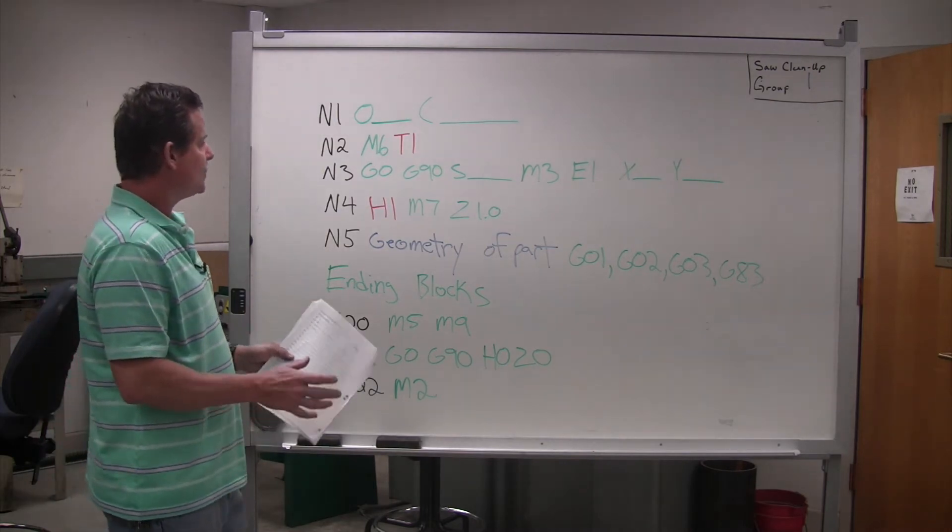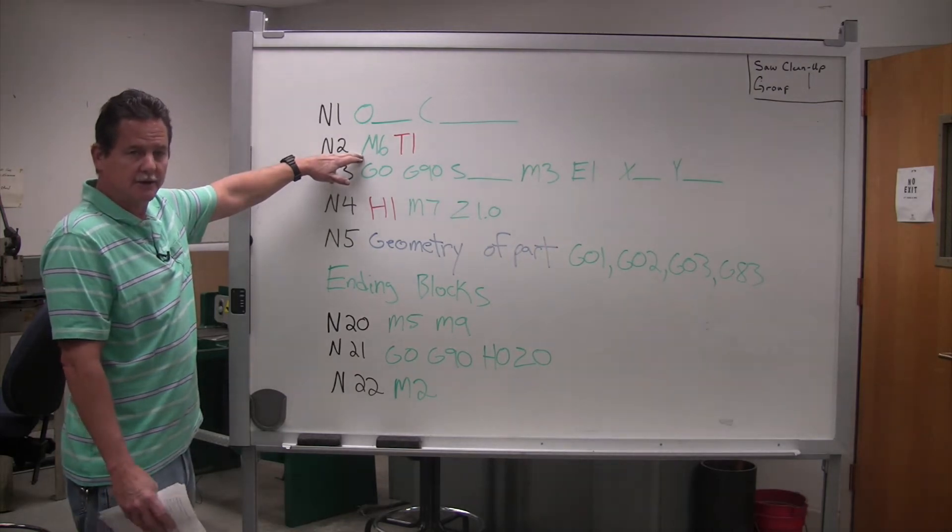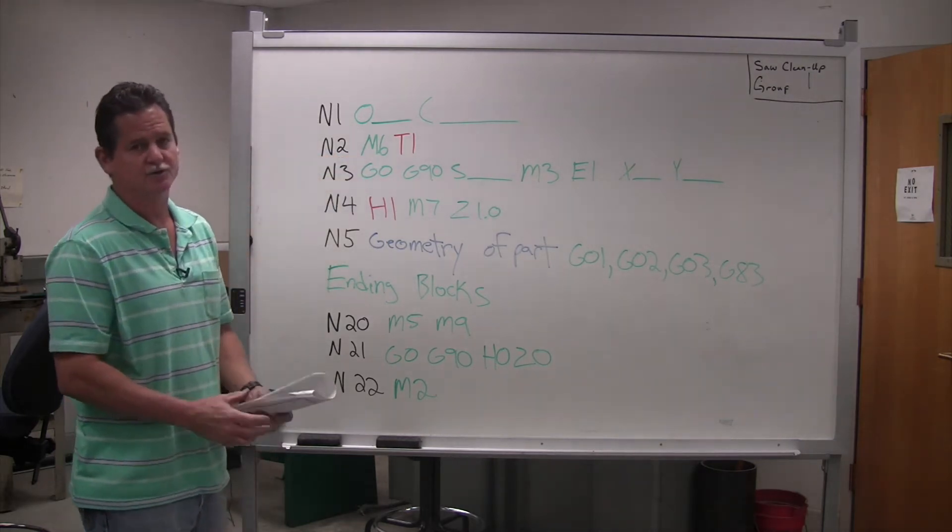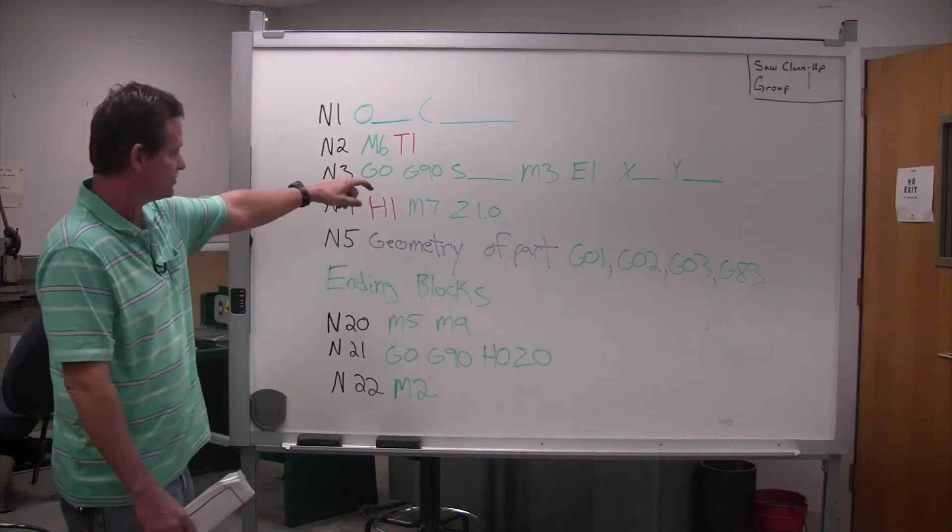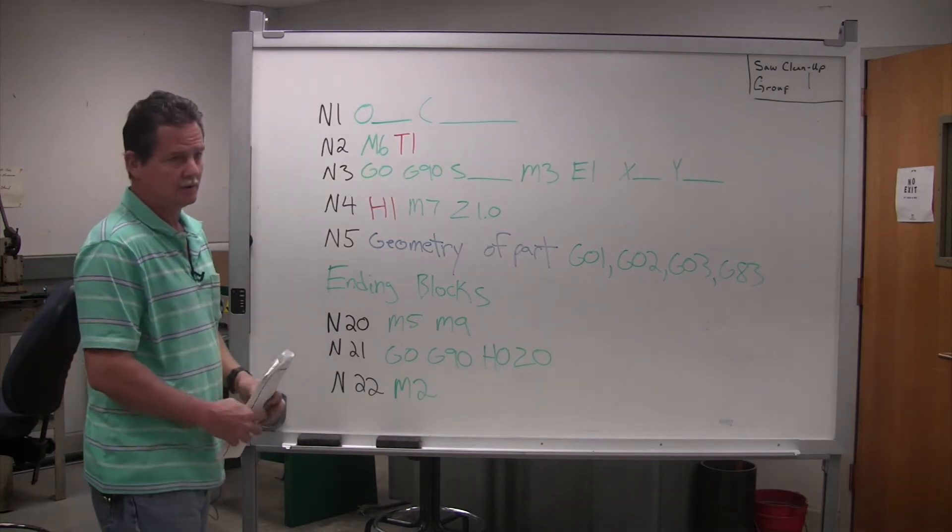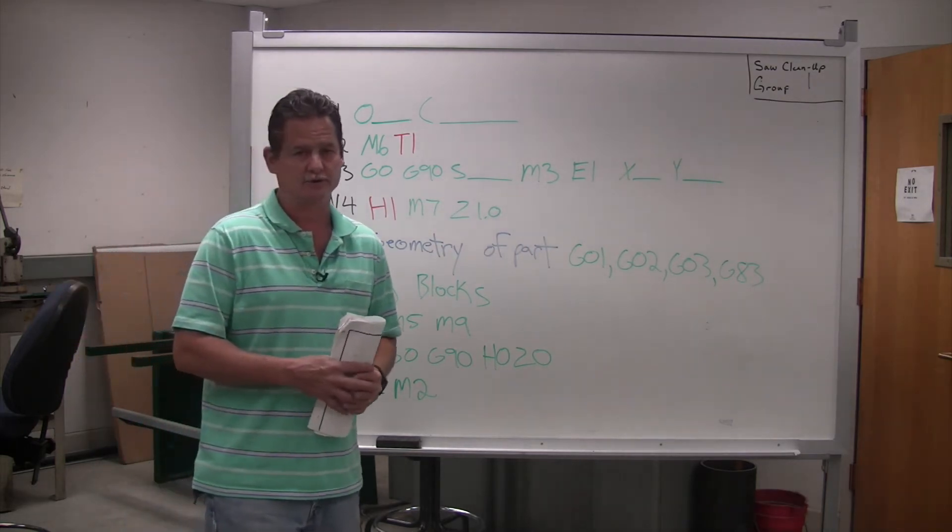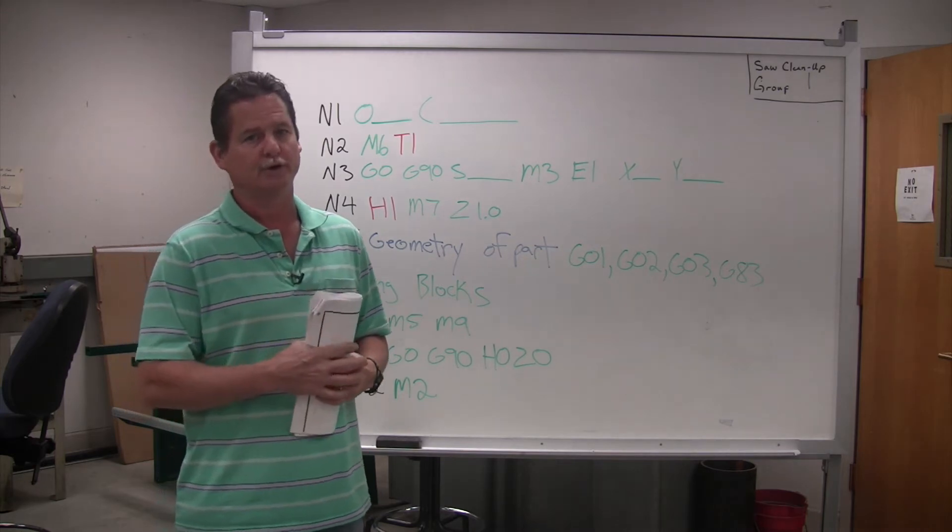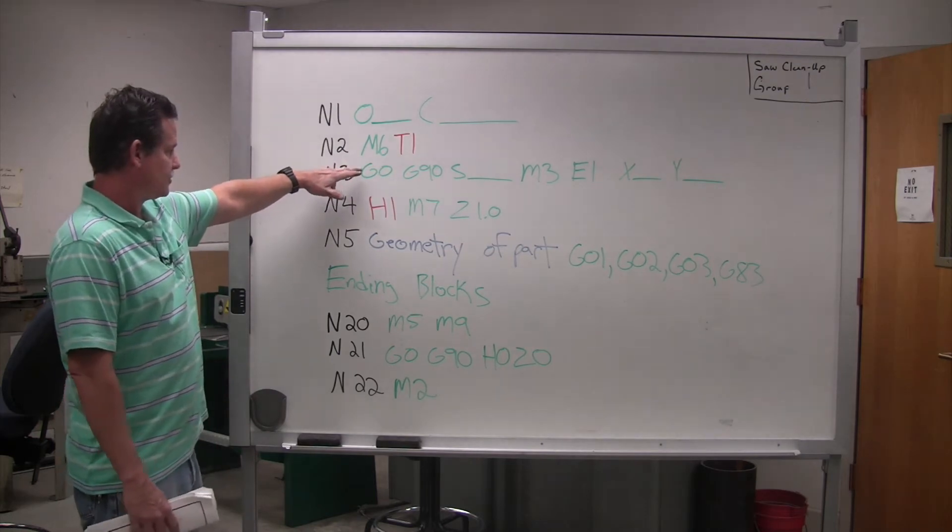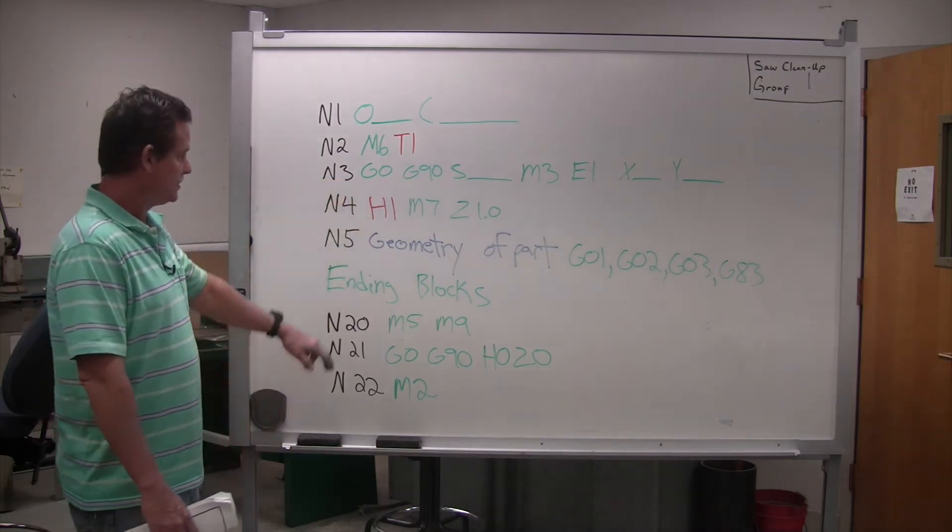Now on our sheet, the next line is M6, which is a tool change code. The M code is a machine code telling the machine to do something. M6 is telling it to change tools. So you're telling the machine M6, T1. Go get tool number one for your program. Now this is just an example. You may be using tool number 10, tool number 12, whatever the case may be. I have a tool list on the machine, so you can figure out what tool you're going to need for your program. That's where you put that. You hit enter. It goes in. Hit insert. Drops down N3.